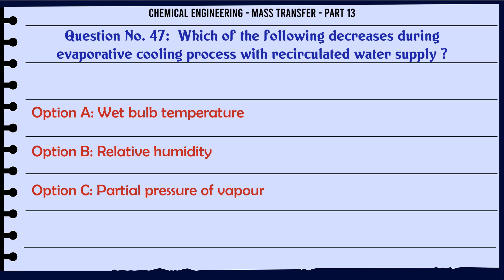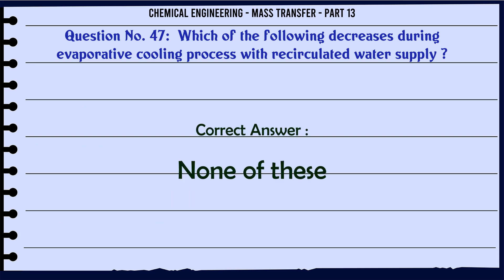Which of the following decreases during evaporative cooling process with recirculated water supply? A. Wet bulb temperature. B. Relative humidity. C. Partial pressure of vapor. D. None of these. The correct answer is: None of these.